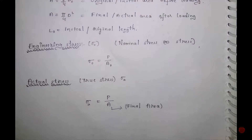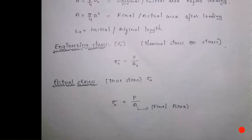There are two types of axial stresses: engineering stress and actual stress. For engineering stress, the initial area is used, but actually the area size is reduced during loading. So in actual stress, the final area is adopted.